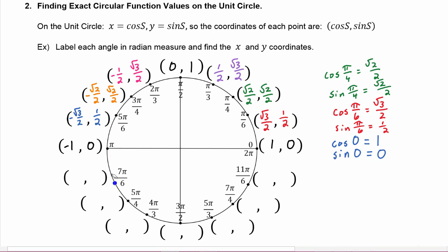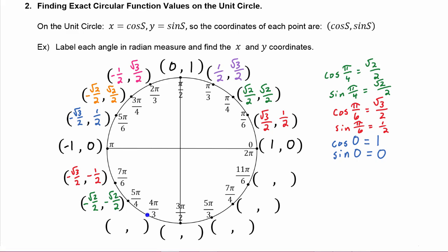The cosine of 7π/6 is negative √3/2 and the sine of 7π/6 is negative 1/2. The cosine of 5π/4 is negative √2/2 and the sine of 5π/4 is also negative √2/2. For s equals 4π/3, the cosine of 4π/3 is negative 1/2 and the sine of 4π/3 is negative √3/2.